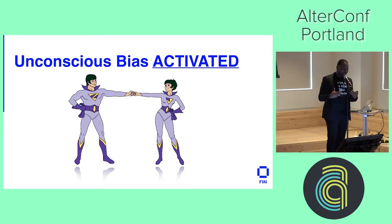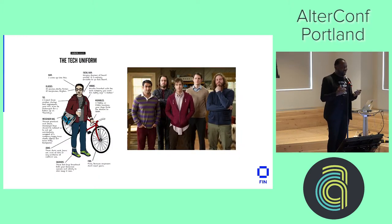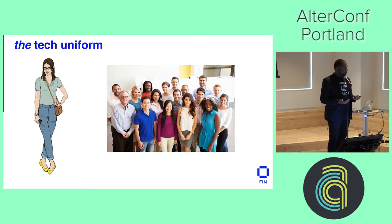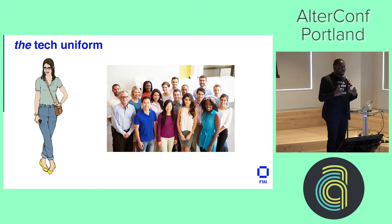Now we've activated our unconscious bias — how do we reduce it as we're working on our technology teams, our project managers, our designers, our developers? How do we get them to flex their bias muscles so they're actually being more thoughtful? The first thing to consider is the makeup of your team. These teams don't just look like the Silicon Valley show — they look more like this room. How do we reinforce that diversity in thought and perspectives will help create a better product? Diverse teams put out better products, and I see it every day.